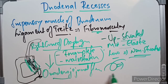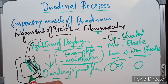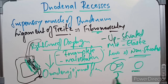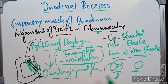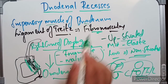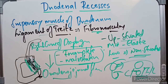Sometimes the ligament of Treitz may kink the duodenal jejunal flexure and cause partial intestinal obstruction. If the ligament is short, the duodenum becomes O-shaped; if it is long, the duodenum looks J-shaped. Commonly, three shapes are described: C-shaped, O-shaped, J-shaped, and L-shaped.